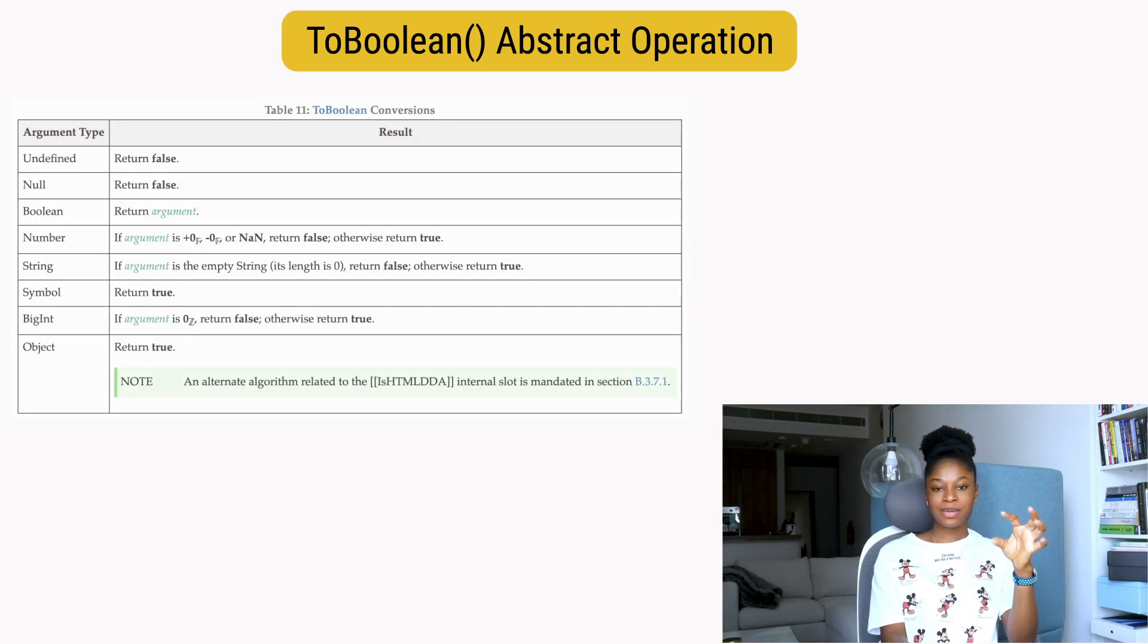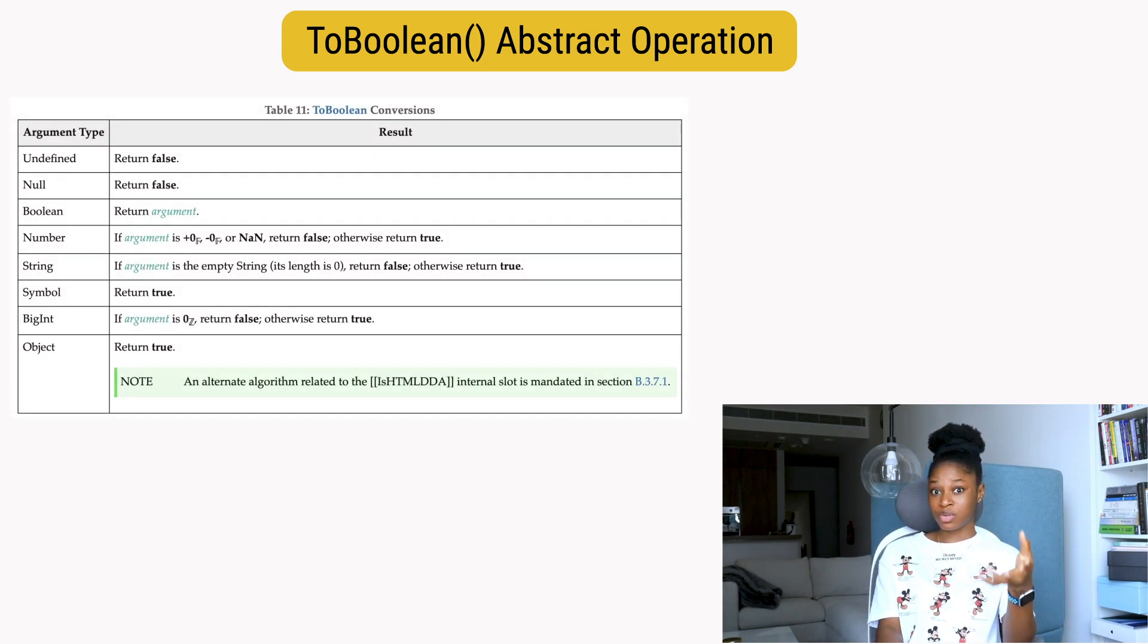So all JavaScript values can be divided into two groups: the truthy values and the falsy values. This table in the spec defines a very short list of values that will return false when coerced to boolean. They're called falsy values.